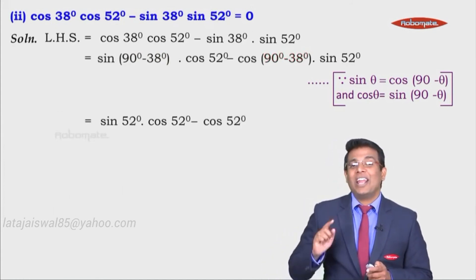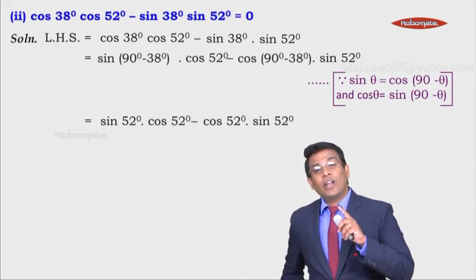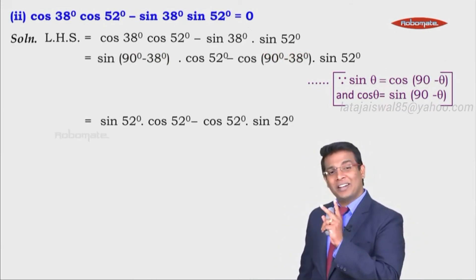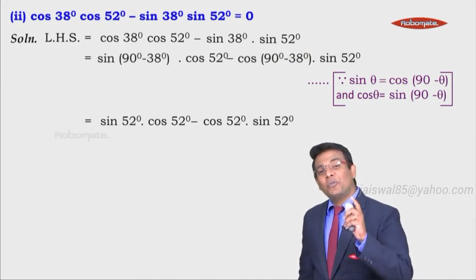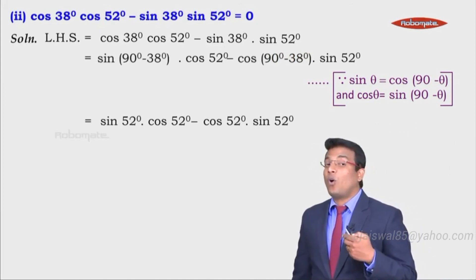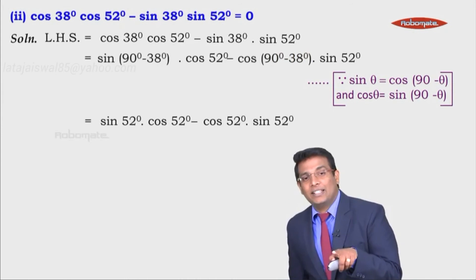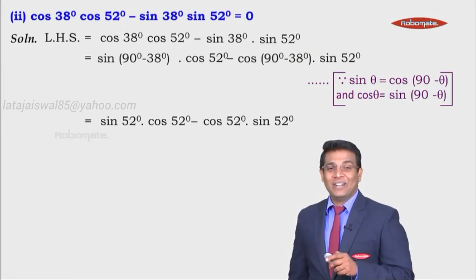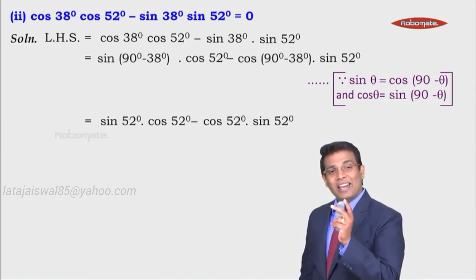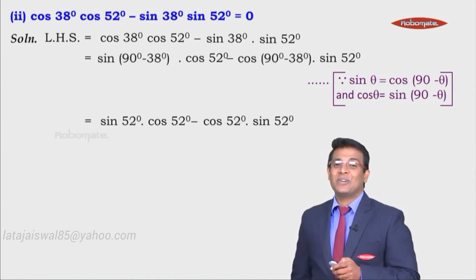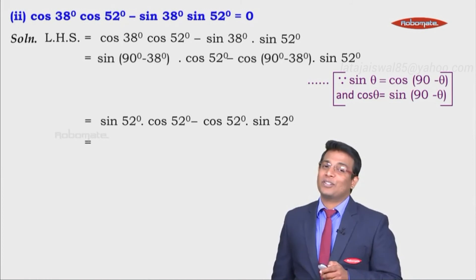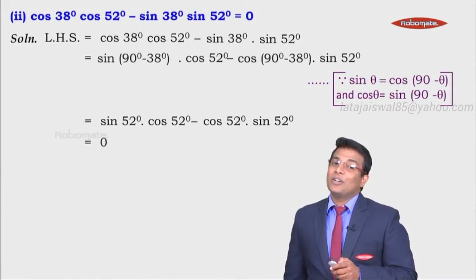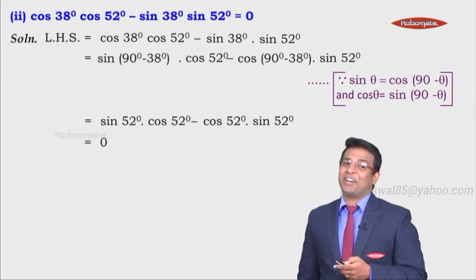Into sin of 52. Now look at those two expressions. We have sin 52 into cos 52, minus cos 52 into sin 52 — they are the same expression. So one minus the same gives us 0. That means the same expression subtracted from itself equals 0. We have obtained the right hand side.